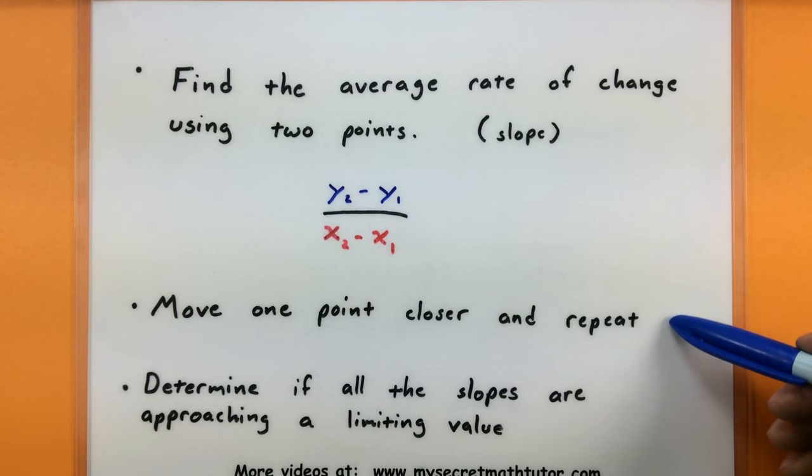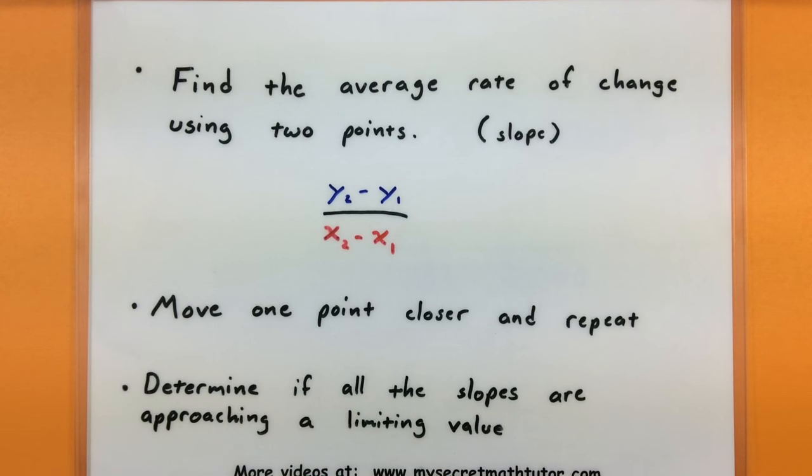We'll keep repeating this process, moving points closer and closer to one another, and keep recording their slopes to see if we can determine if they actually approach some other value, what we will call our limiting value. If they do appear to get close to a limiting value, that's what we will use as an approximation to our instantaneous rate of change.